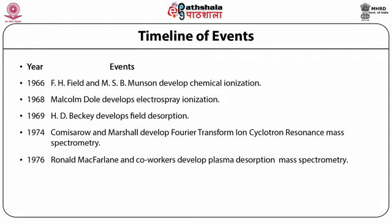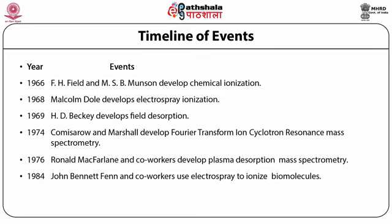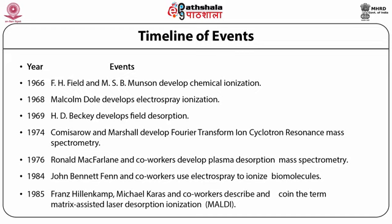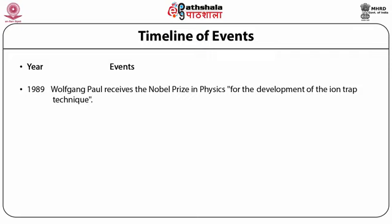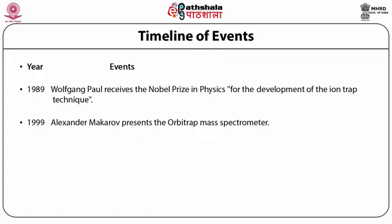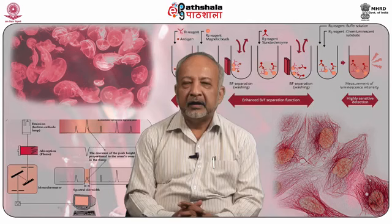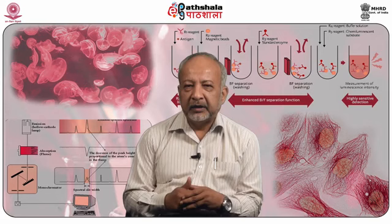In 1968, Malcolm Dole developed electrospray ionization. In 1969, H.D. Becke developed field desorption mass spectrometry. In 1974, Comisarow and Marshall developed Fourier transform ion cyclotron resonance mass spectrometry. In 1976, Ronald McFarlane and co-workers developed plasma desorption mass spectrometry. In 1984, John Bennett Fenn and co-workers used electrospray to ionize biomolecules. In 1985, Franz Hillenkamp, Michael Karas and co-workers described and coined the term matrix-assisted laser desorption ionization, that is MALDI. In 1989, Wolfgang Paul received the Nobel Prize in Physics for the development of the ion trap technique. In 1999, Alexander Makarov presented the orbitrap mass spectrometer.